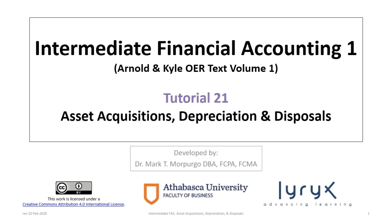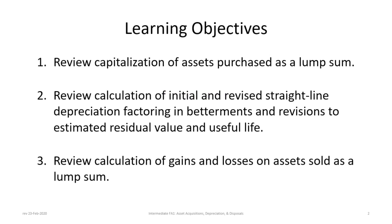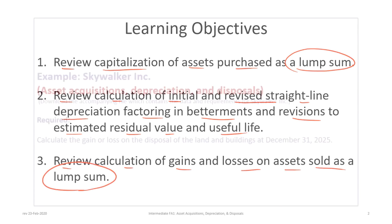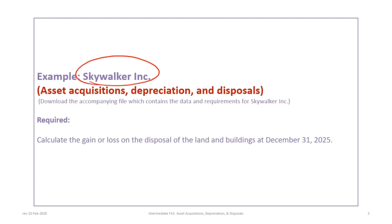Hello and welcome to Intermediate Financial Accounting 1 Tutorial 21. This tutorial will cover asset acquisitions, depreciation and disposals. There are three learning objectives: first, to review the capitalization of assets purchased as a lump sum; second, to review how to calculate initial and revised straight-line depreciation factoring in betterments and revisions to estimated residual values and useful life; and third, to review the calculation of gains and losses on assets sold as a lump sum. This example is based on the Skywalker data, so please make sure you download the correct file to follow along.